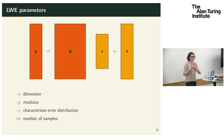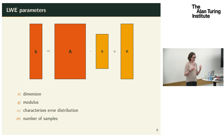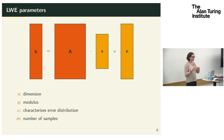You can also pose a decision LWE problem: given A and B, can you tell whether they're uniformly random or formed as B = AS + E? The security parameters characterizing an LWE instance are: N, the dimension of the secret vector (essentially a security parameter); Q, the modulus for all vectors and matrices; alpha, characterizing the error distribution (a discrete Gaussian with standard deviation sigma/Q); and M, the number of samples.